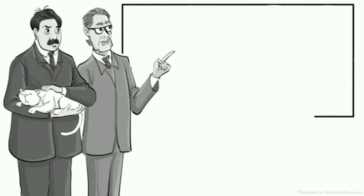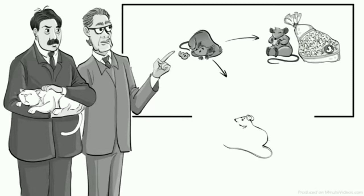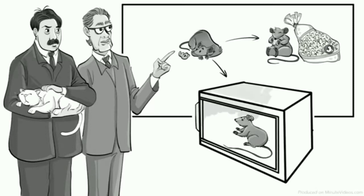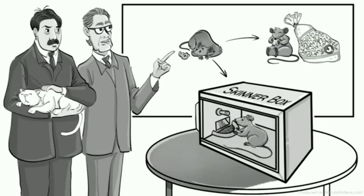Skinner believed that organisms are doing what they do naturally, until they accidentally encounter a stimulus that creates conditioning, which results in a change in behavior. To test this, he placed a rat inside an operant conditioning chamber, which later became known as the Skinner Box. Among other things, inside the box was a lever that would release food when pressed.